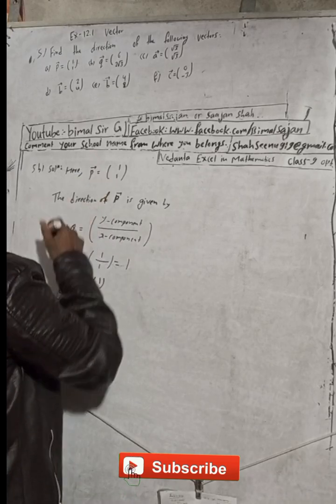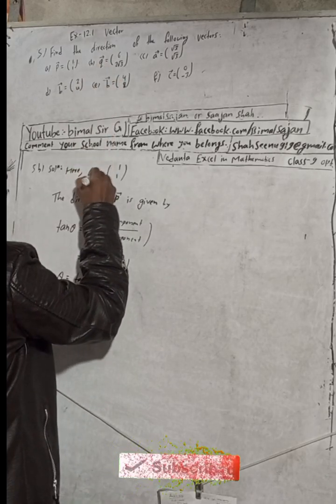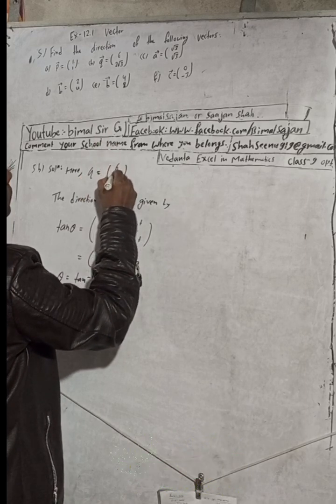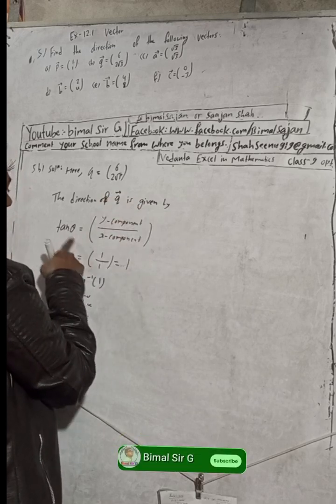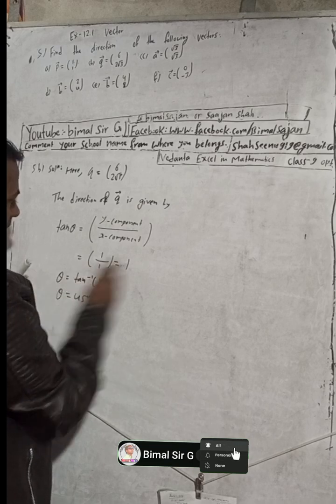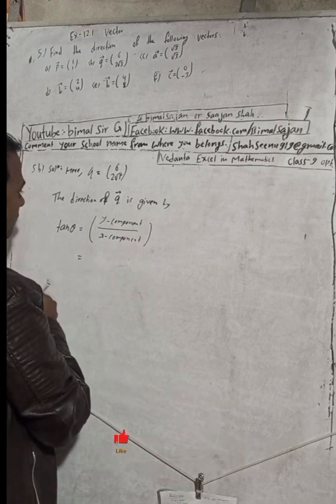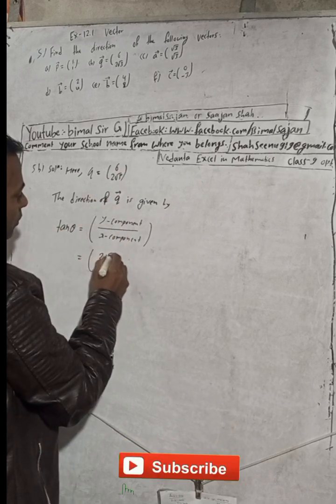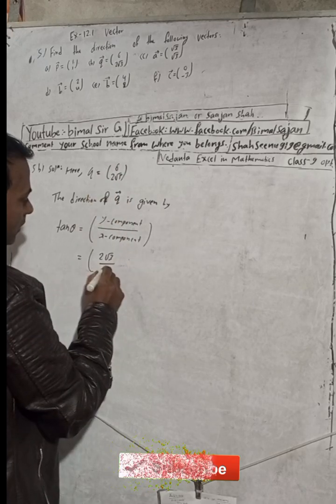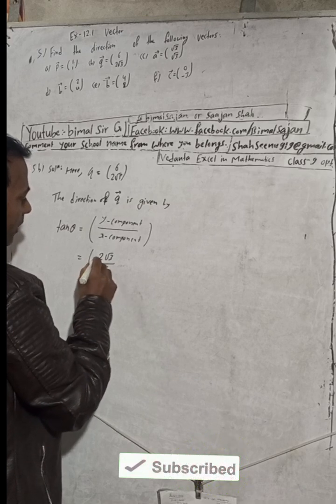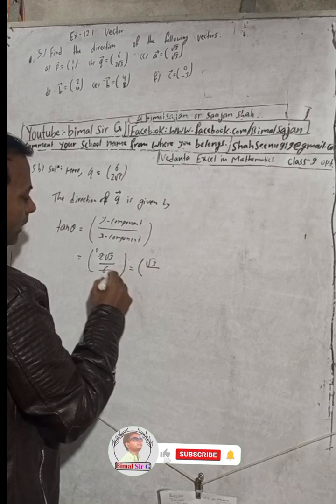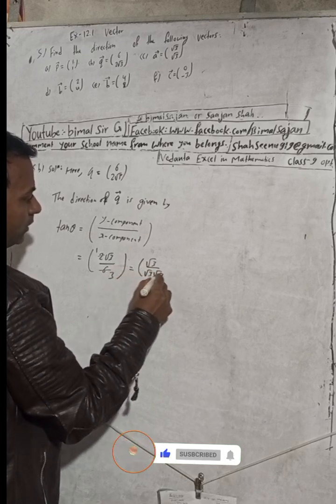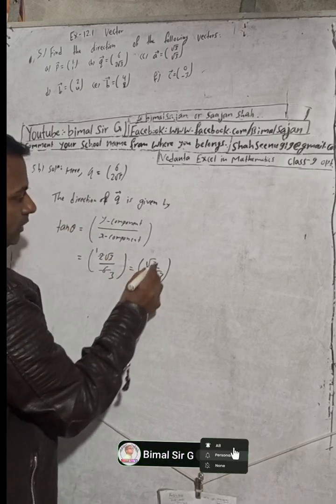For part (b), the vector Q is equal to (6, 2√3). The direction of Q vector is given by tan theta equals y component divided by x component. The y component is 2√3 and the x component is 6. Dividing, we cancel: half of 2 is 1 and half of 6 is 3, giving 1 over √3, since √3 × √3 equals 3.